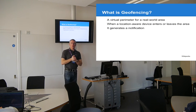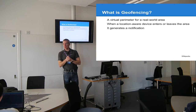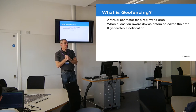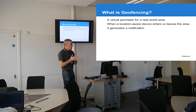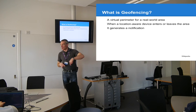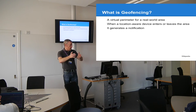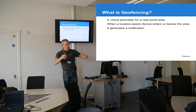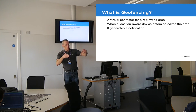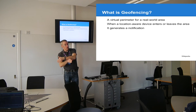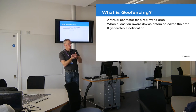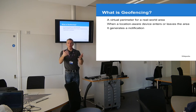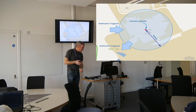Geofencing is a really important concept. It works outdoors using GPS receivers and also indoors using Bluetooth — Apple calls that iBeacon. The idea is you create a perimeter around a latitude and longitude and specify a radius. As the phone enters that radius it triggers an event; as it leaves that radius it triggers another event. If you were a shop, you could welcome customers as they walk up and send offers as they leave.